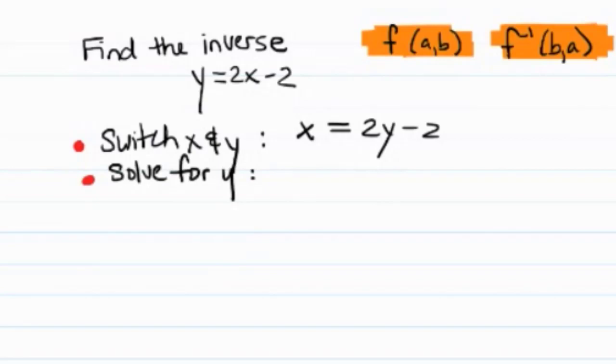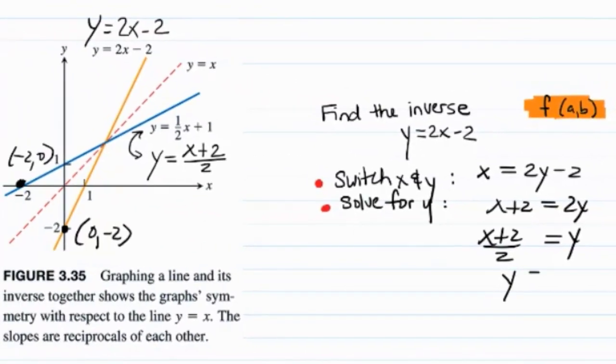We've already found the inverse, but we just like to have it in y equals format when possible. So you would add 2 and divide by 2, and you'd get y equals x plus 2 over 2, or in other words, y equals 1 half x plus 1. That's one way of finding the inverse of the function.